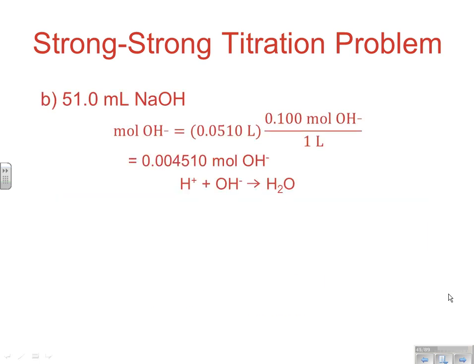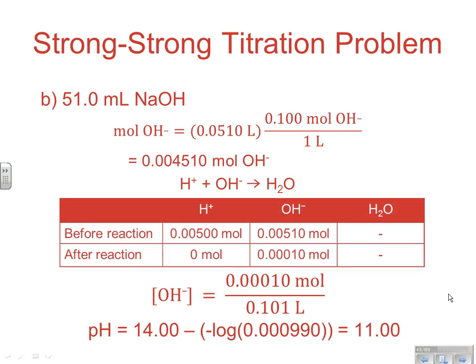At 51 mL of NaOH, we have a slightly different OH- amount — 0.0510 L × 0.100 M = 0.00510 mol OH-. Now there's a little extra OH- after neutralization. Dividing by total volume of 0.101 L gives the OH- concentration, and taking the negative log gives a pH of 11.0. So in just 2 mL of NaOH, we've undergone a massive swing from pH 3.00 to pH 11.00. That's essentially how you do strong-strong titration problems, always comparing H+ and OH-.